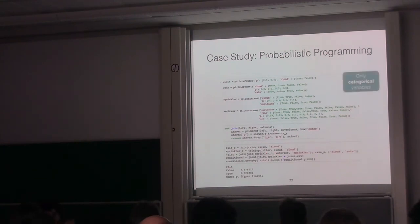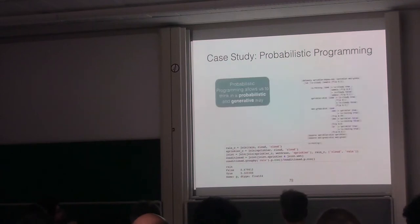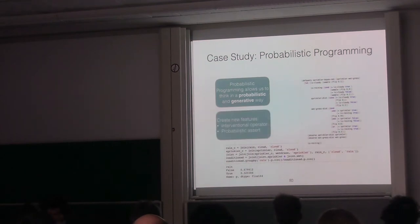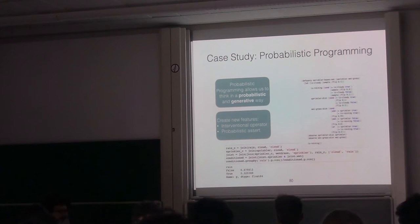We want to know, we know that the sprinkler is on and the grass is wet. We would like to know the posterior distribution of rain. We can answer the same query using a general purpose programming language. Here we build the conditional probability distribution and then the joint distribution condition on the observation. But this only works with categorical variables. We lost the sense, the causal sense. More interestingly, probabilistic programming languages allow us to think in a generative and probabilistic way. We can think about features proper of a probabilistic model, for instance, the interventional operator, the do operator of Judea Pearl. Or the probabilistic assert. Those things are natural to think in this programming language.